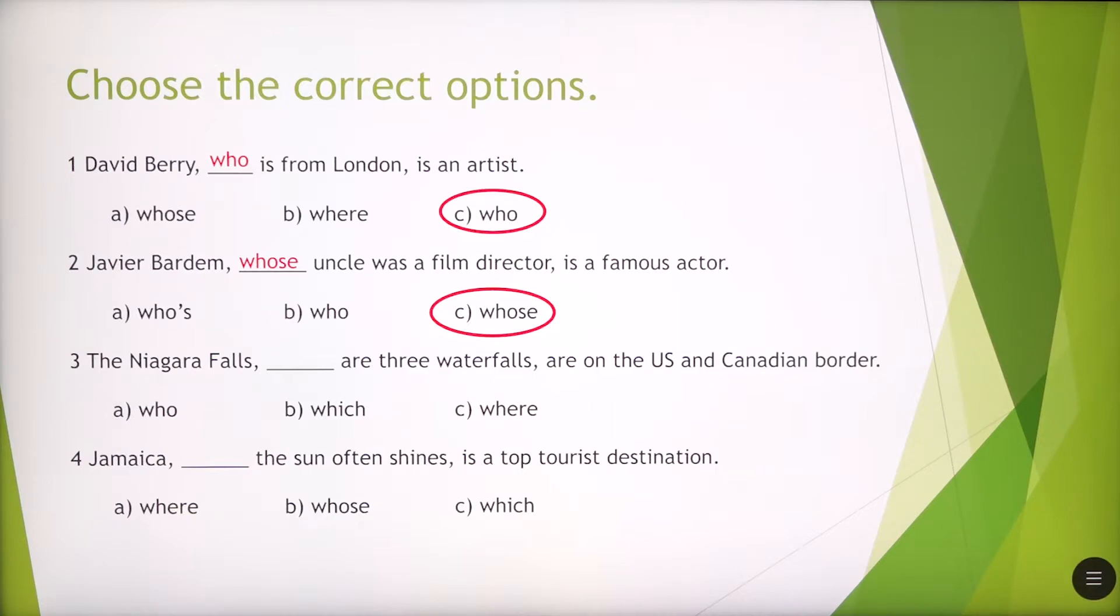Number three, the Niagara Falls, A, B, or C? It's B. The Niagara Falls, which are three waterfalls, are on the US and Canadian border.